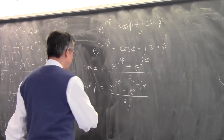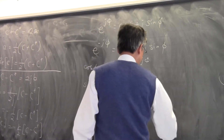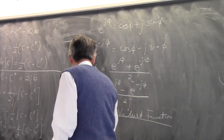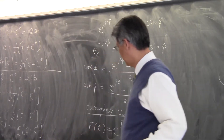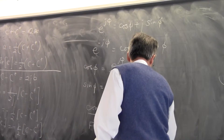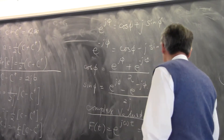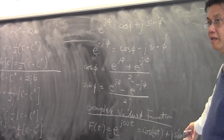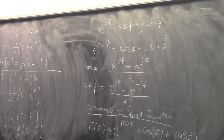The textbook also talks about complex-valued functions, which refers to functions that have both a real part and an imaginary part. An example of a complex-valued function is F(t) = e^(jωt). Written explicitly, this is cosine(ωt) plus j sine(ωt) — a function of t that has both a real part and an imaginary part. This is the simplest example.